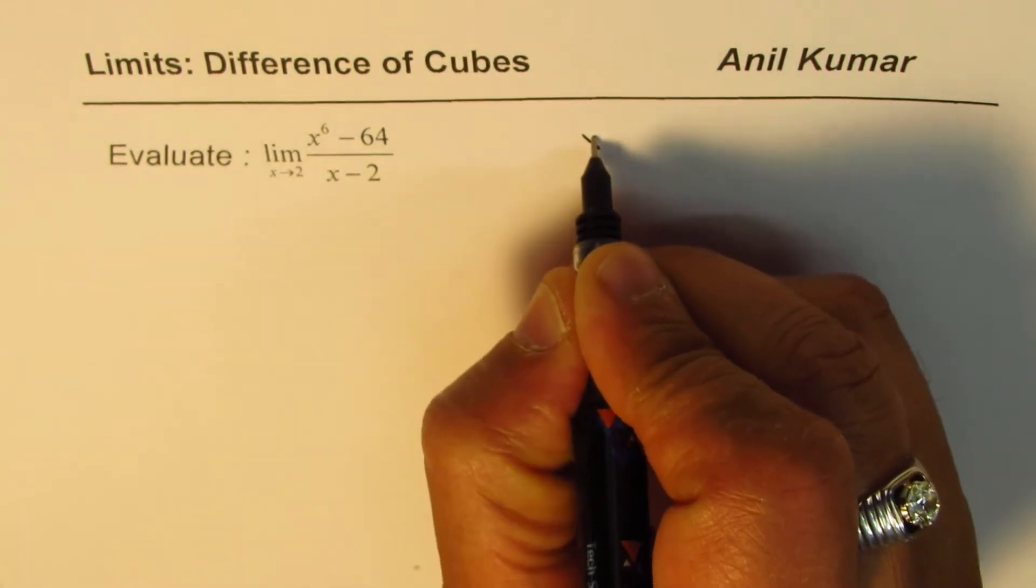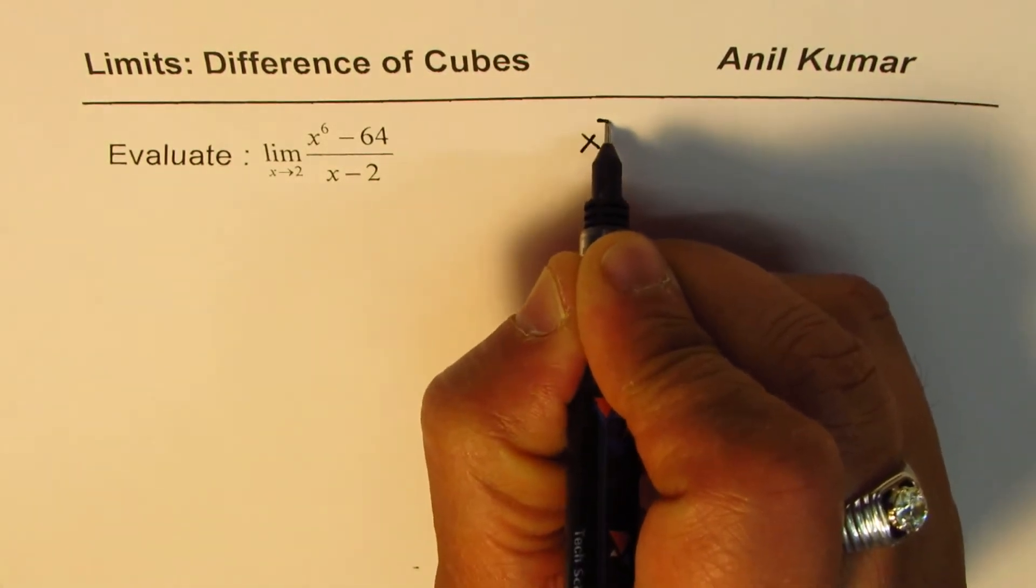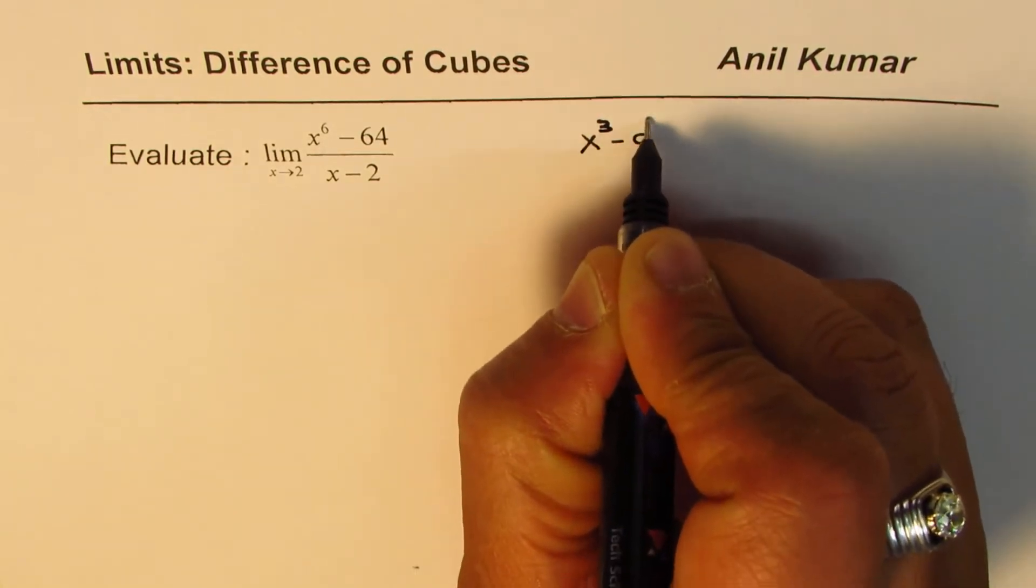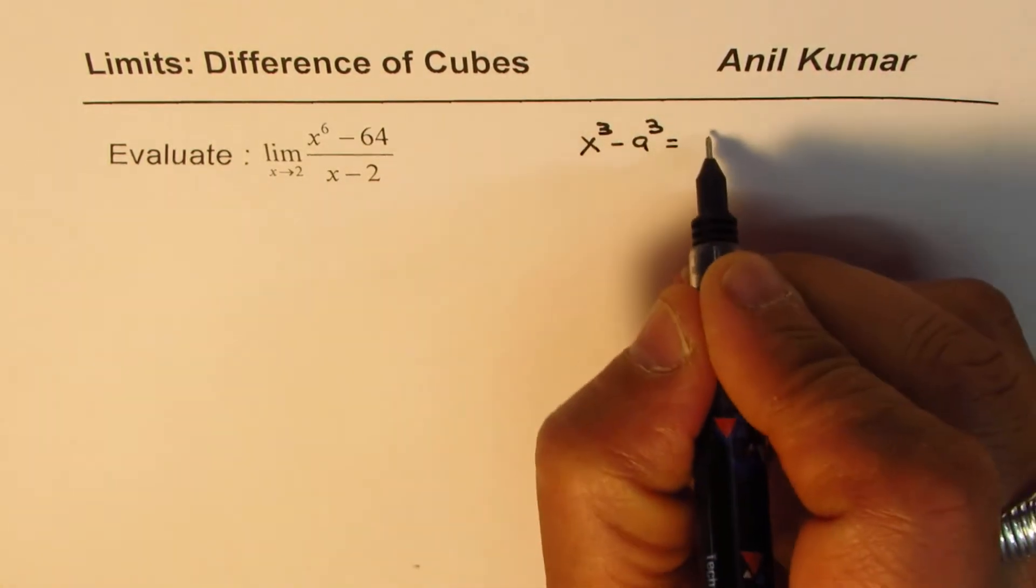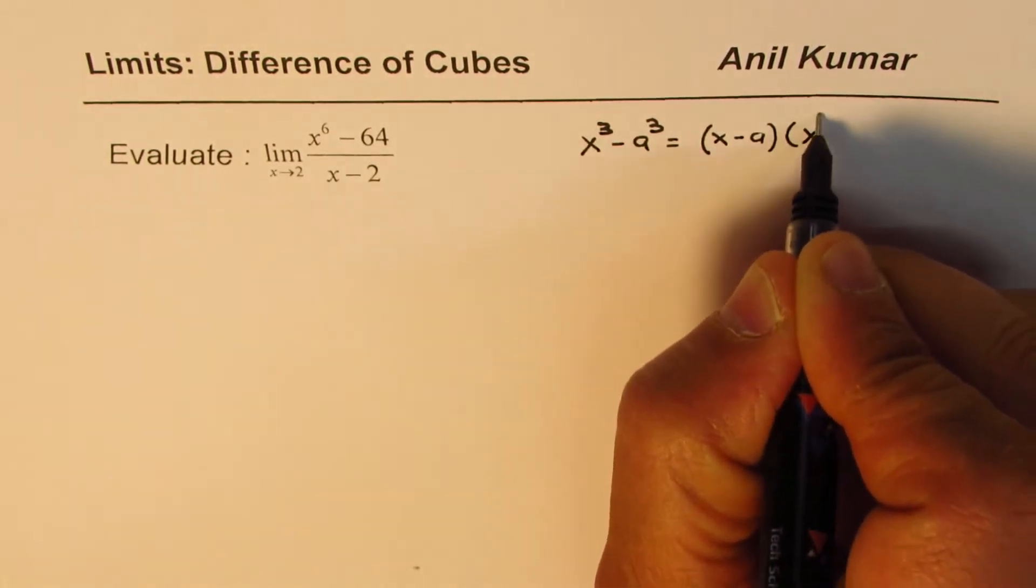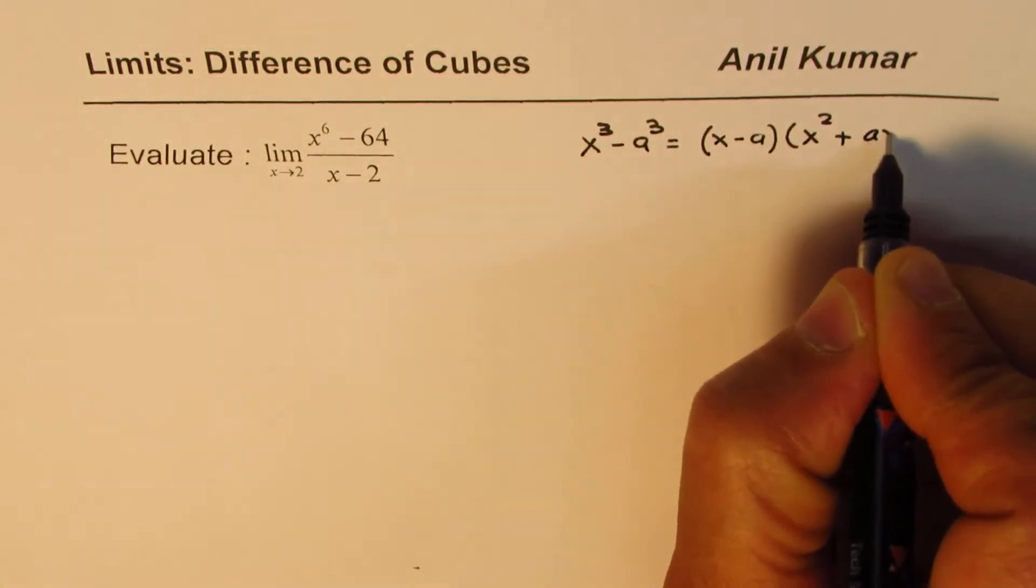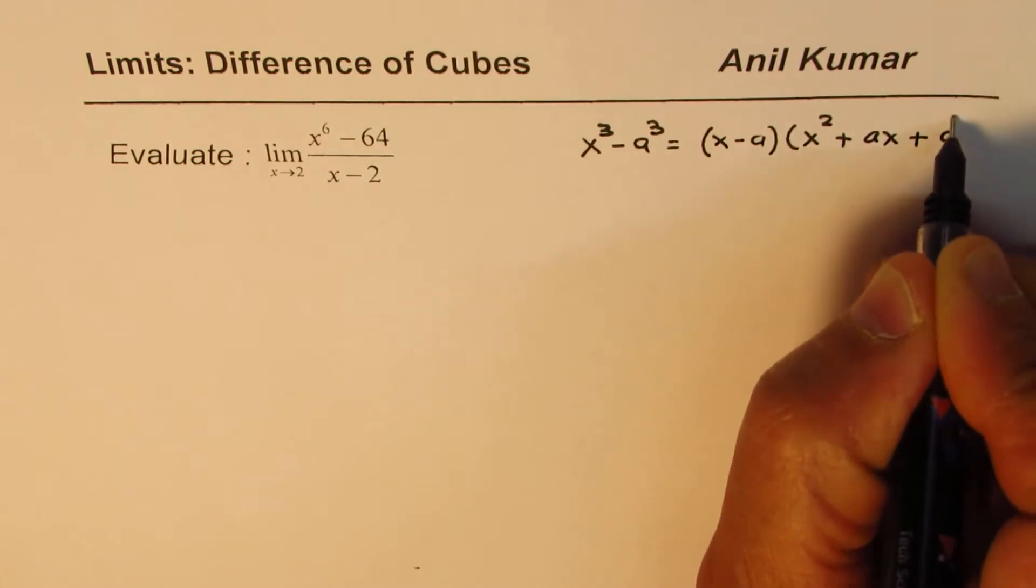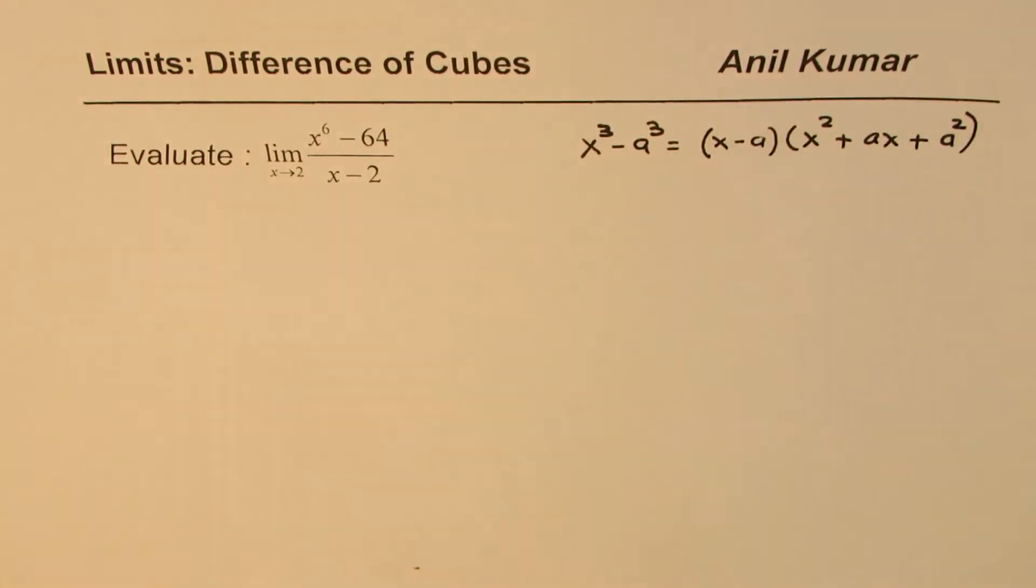Let me rewrite the formula for difference of cubes, which is x cube minus a cube equals x minus a times x square plus ax plus a square. So that is how you would actually factor difference of cubes.